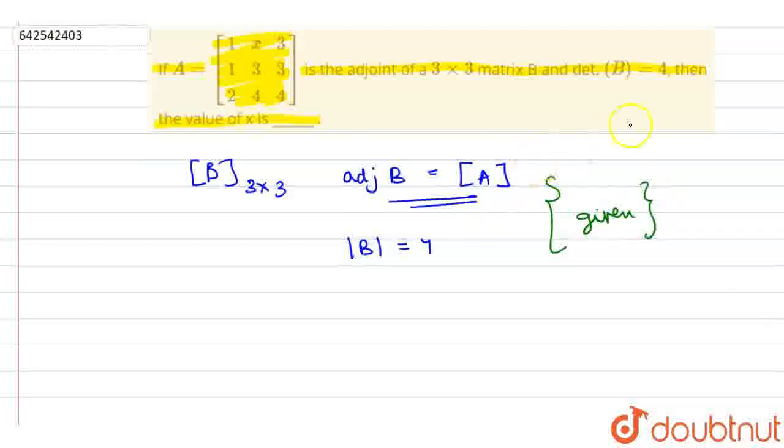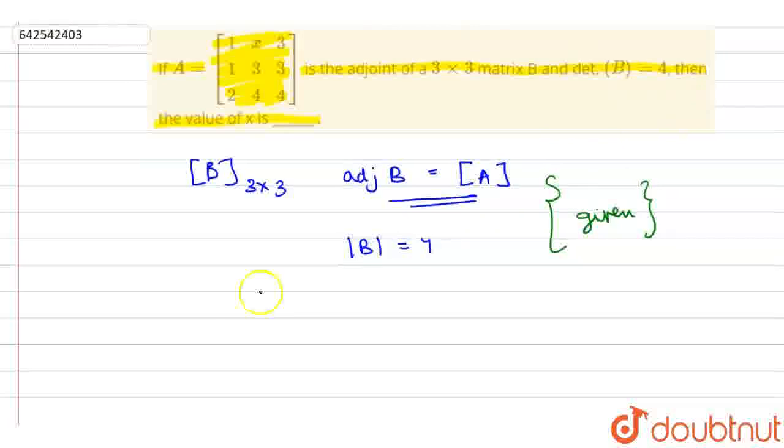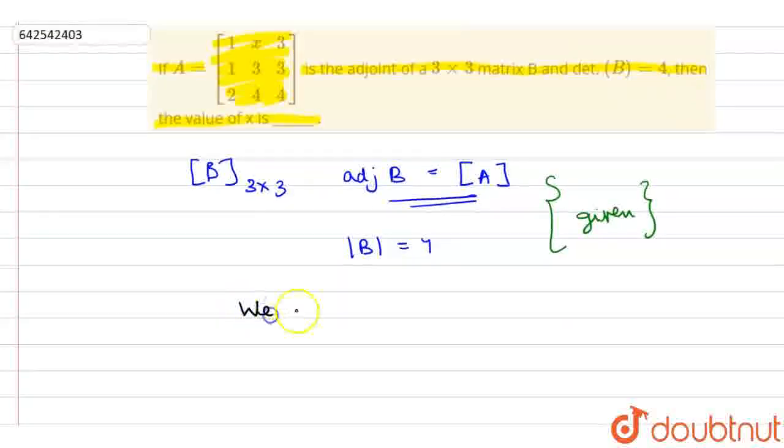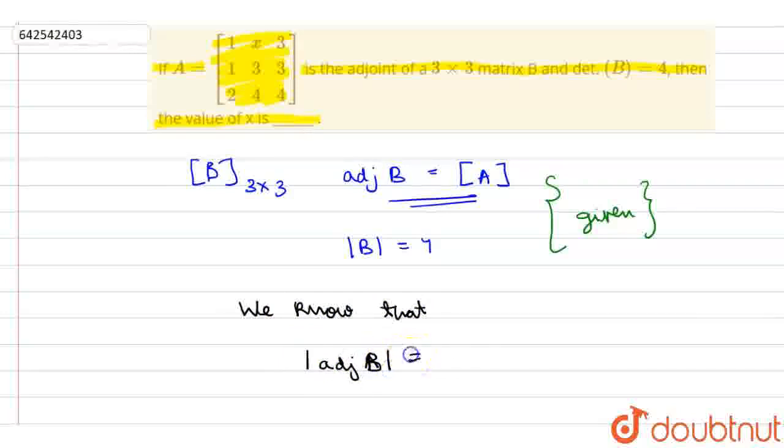So we know that det of adjoint of B is equal to det of B whole square.